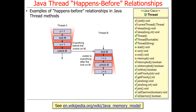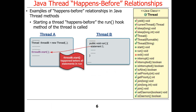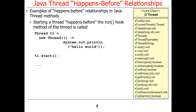There are a number of examples of happens-before relationships in the Java thread methods. For example, starting a thread happens-before the run hook method of the new thread is called. As you can see here, we have thread A which is going to go ahead and create a new thread and start it, and that creation needs to finish before the run method on the newly created thread begins to execute.